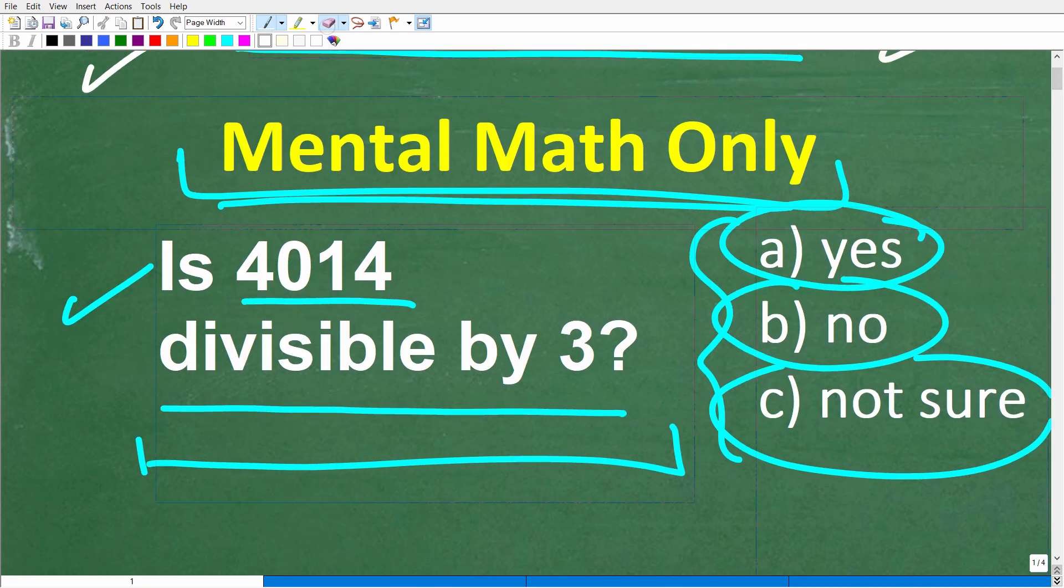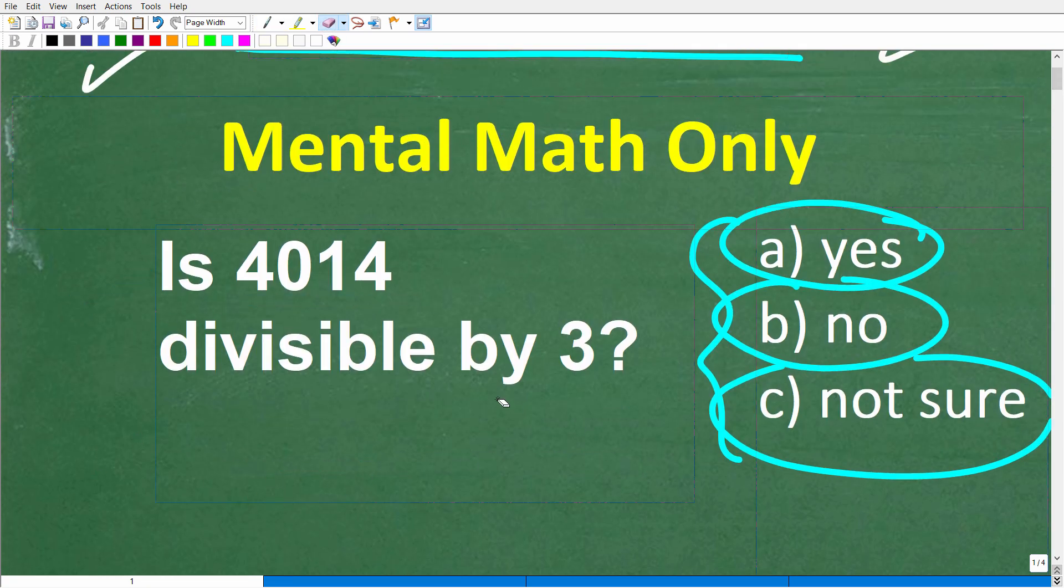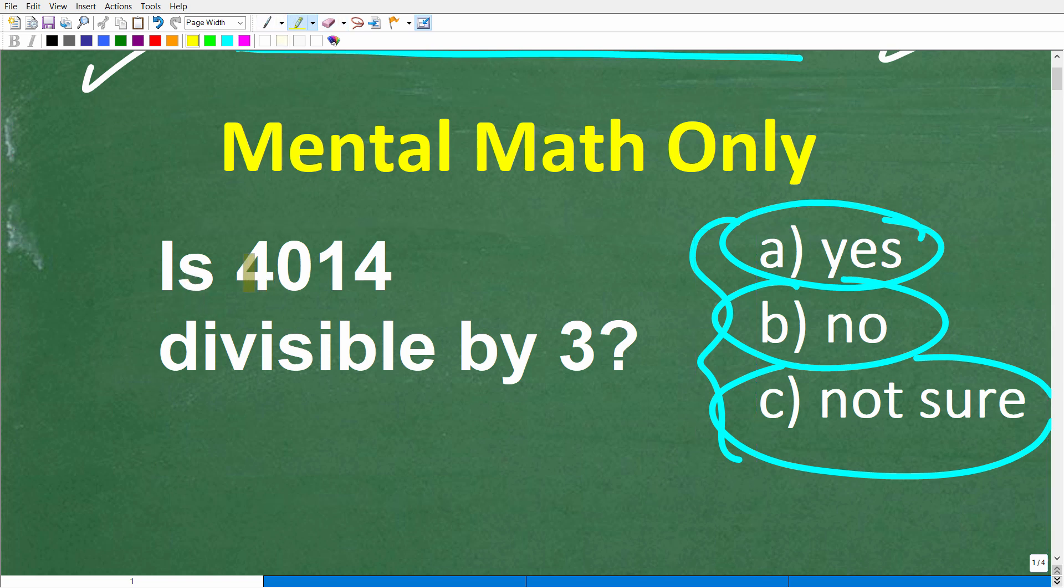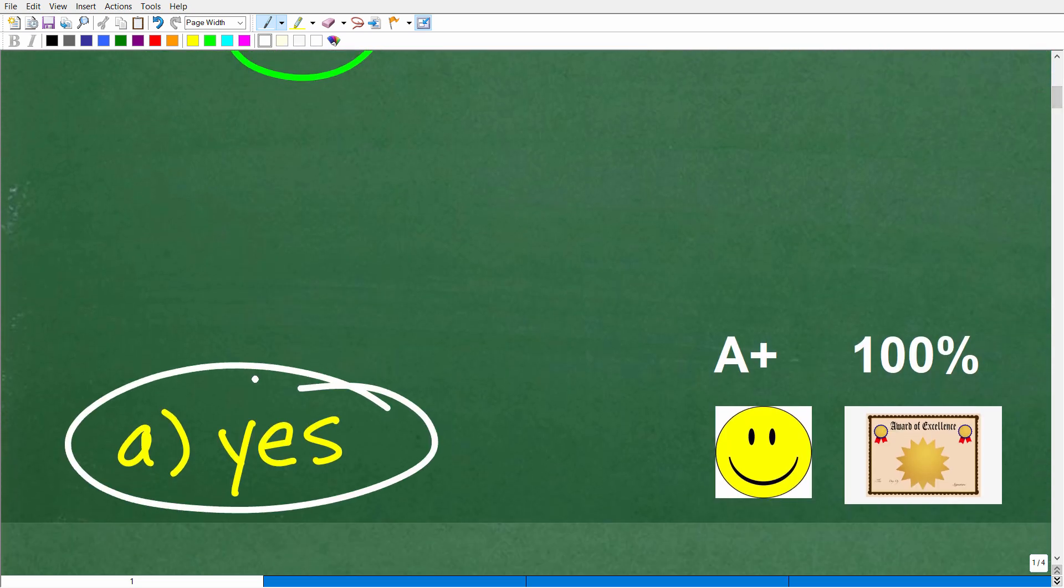All right, so let's take one more look at the problem. So we have, is 4014 divisible by 3? Now, if you don't know what this word divisible means, maybe you're kind of saying, maybe it has something to do with division. And indeed, you would be right. But even if you're not sure, you still have a good chance of guessing and getting this thing right. But let's go ahead and take a look at the right answer. The correct answer is A. Yes, it is.